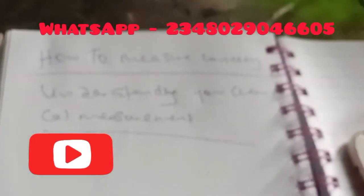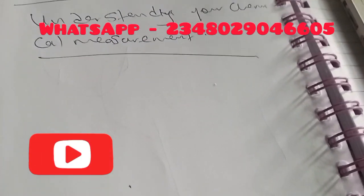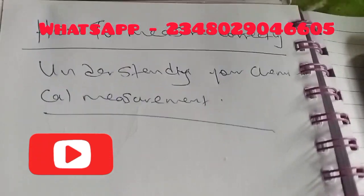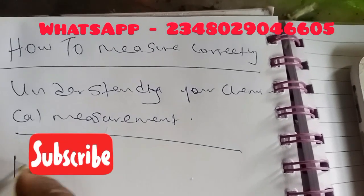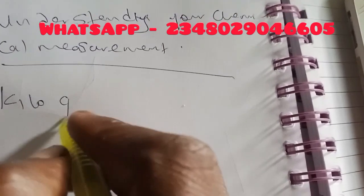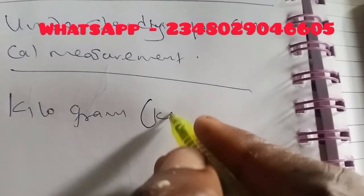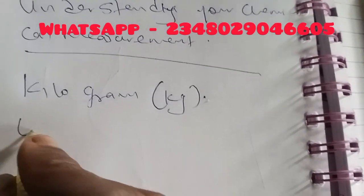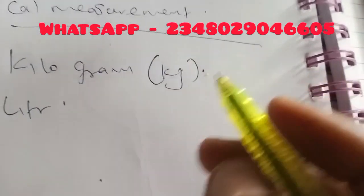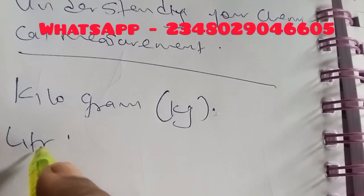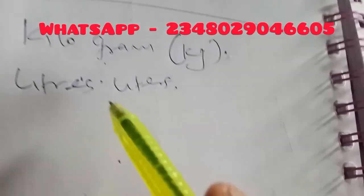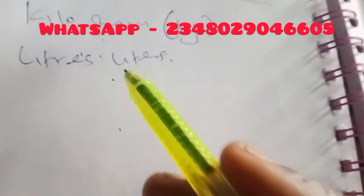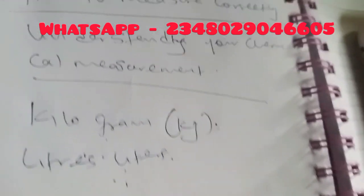When it comes to measuring our chemicals in production, we normally use two different types of unit of measurement. We either measure in kilograms, which we abbreviate as kg, or in liters.